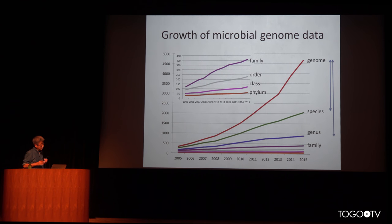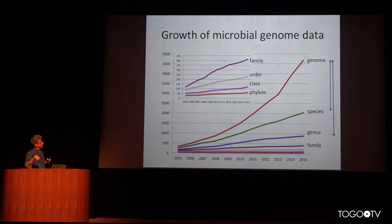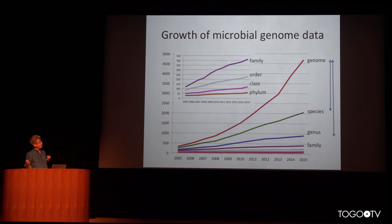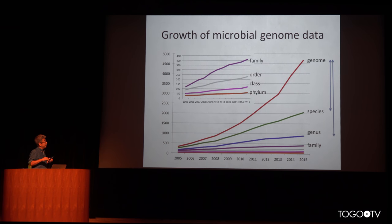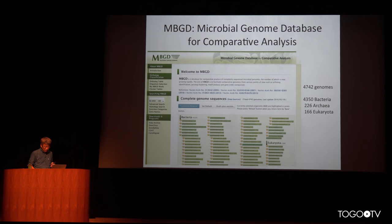On the other hand, the number of higher taxonomic ranks are still increasing gradually. This is partly because the number of genome sequences obtained from metagenomic analysis from various environmental samples also increases higher-level taxonomic levels. We developed a database for microbial genome comparison, named MBGD.